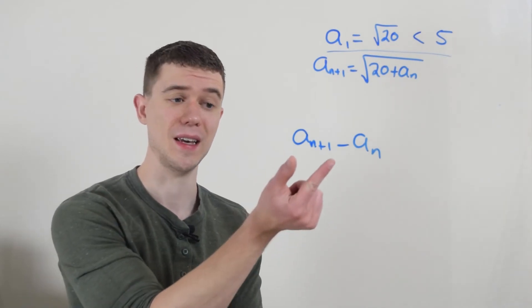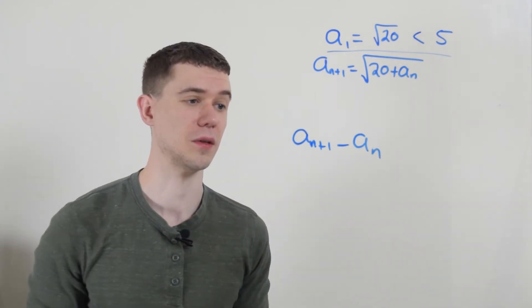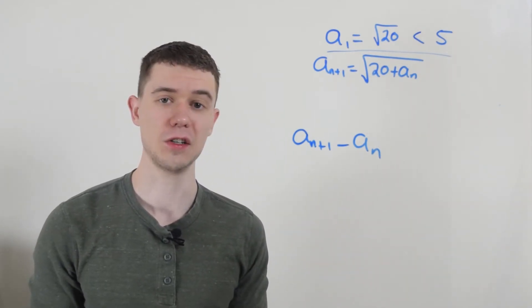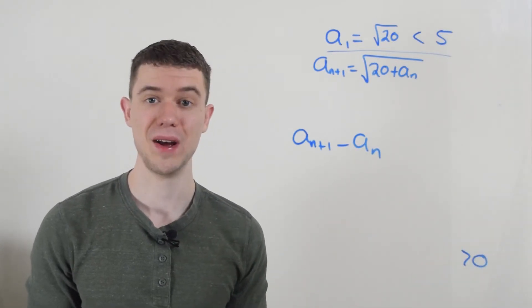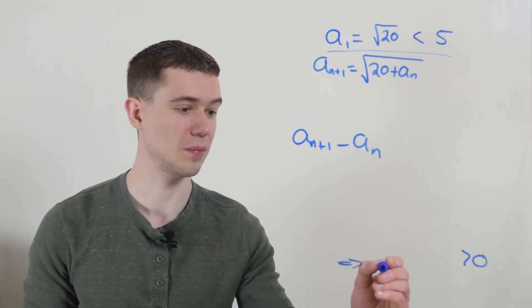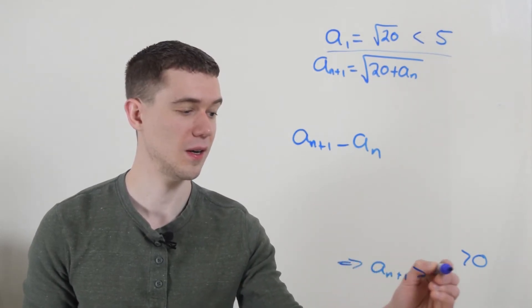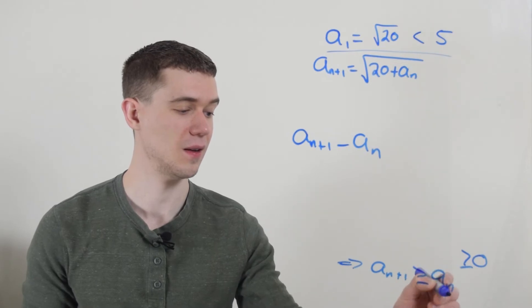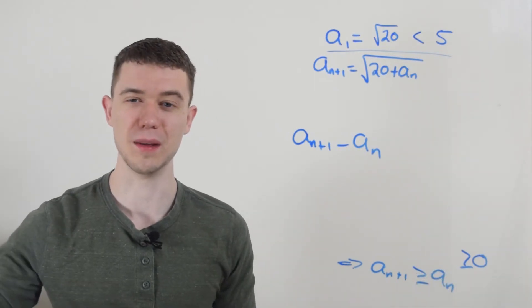So like I said, I'm going to take the n plus one term, and I'm going to subtract it by the a_n term. And I'm hoping that this eventually is going to be bigger than zero. That would mean that the sequence is always increasing, because this would imply that a_{n+1} is always bigger than a_n. Let me show you what I mean.